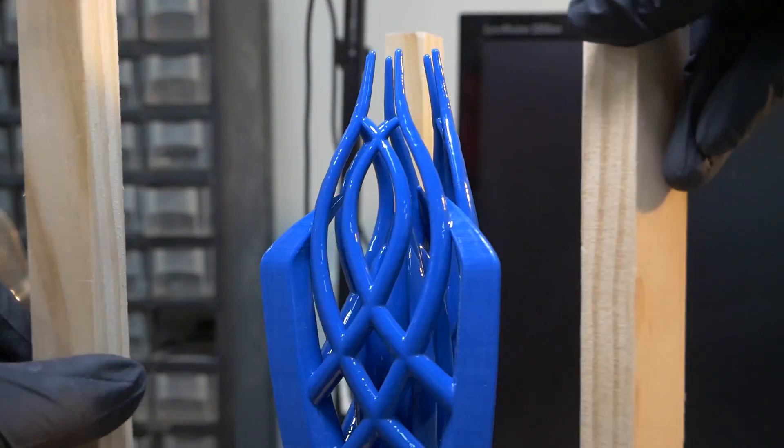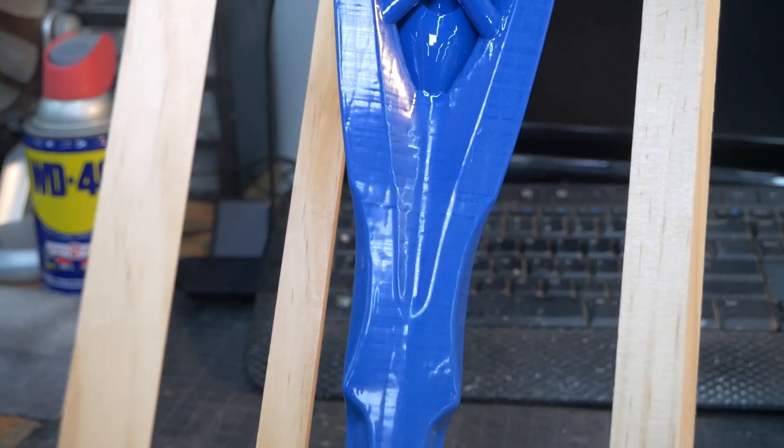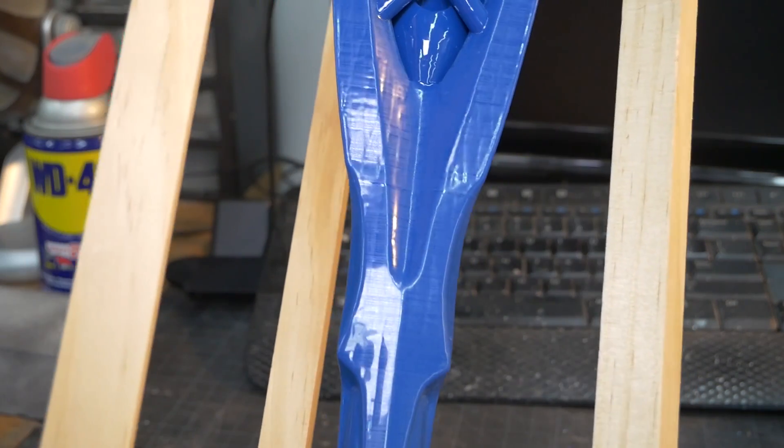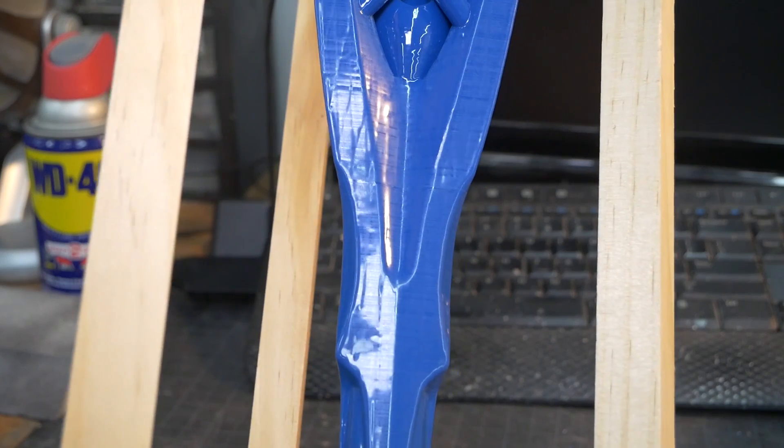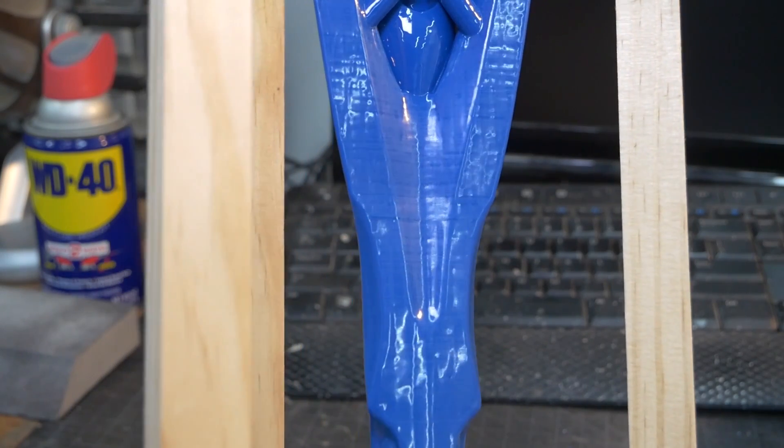The article I read said the acetone can take quite a while to evaporate, so I left the print overnight. On first inspection, the staff looked pretty smooth, but when held up to the light you could see all the lumpy areas. I could also see some of the infill.